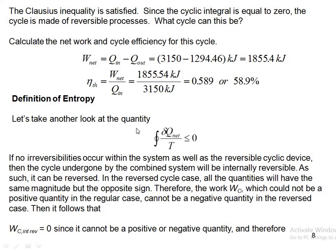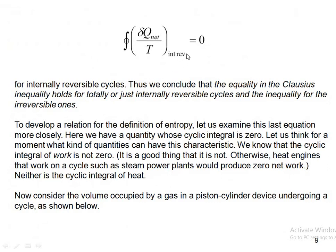If there are no irreversibilities within the system or the reversible cyclic device, the cycle undergone by the combined system will be internally reversible and can be reversed. In the reverse cycle, all quantities have the same magnitude but opposite sign. The work cannot be positive in the regular case and cannot be negative in the reverse case, so it must be zero. Therefore, for an internally reversible process, the cyclic integral of (δQ_net / T) = 0. The equality in the Clausius inequality holds for totally or internally reversible cycles, and inequality holds for irreversible ones.